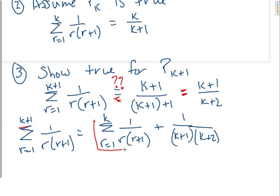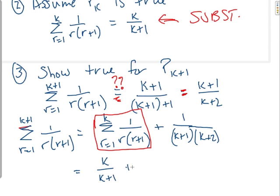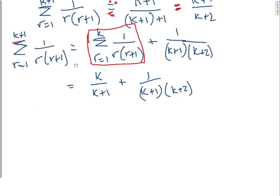This part here is my assumption. This is what I'm going to substitute right here. My assumption. Substitute. Okay. So by my assumption, I can substitute that in. And I can say that this is going to be k over k plus 1. My k plus 1 term is this.